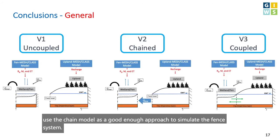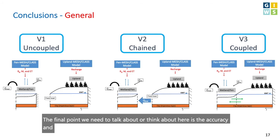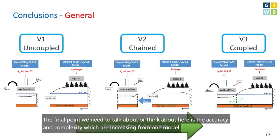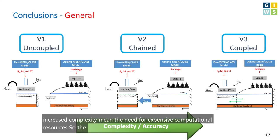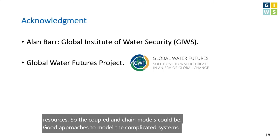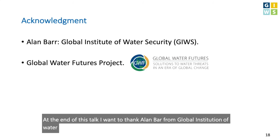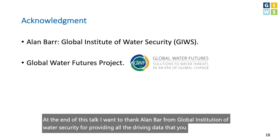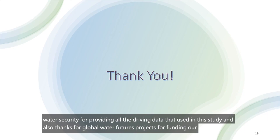The final consideration is the tradeoff between accuracy and complexity, which both increase from the uncoupled to the coupled model. Increased complexity means greater computational resource requirements. Therefore, the uncoupled and chained models could be good approaches for modeling these complicated systems. I want to thank Alan Barr from the Global Institute for Water Security for providing the driving data used in this study, and also thank the Global Water Futures project for funding our research. Thanks everyone for your attention.